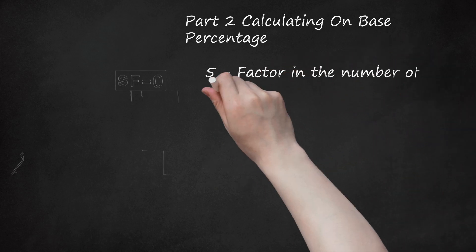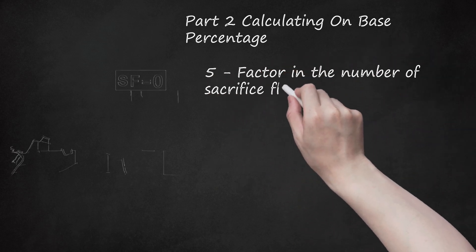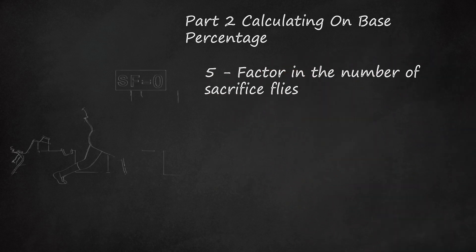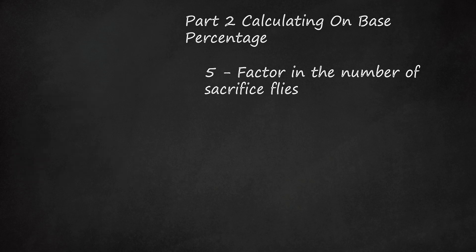Factor in the number of sacrifice flies. If the player hit any sacrifice flies, you need to know that to determine the on-base percentage. In the example above, Blackman did not hit any sacrifice flies. SF would therefore equal zero.